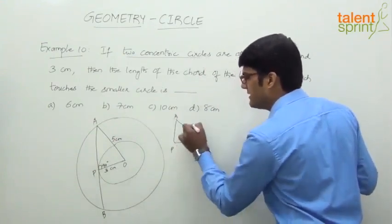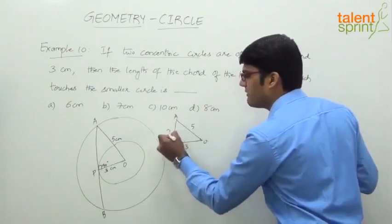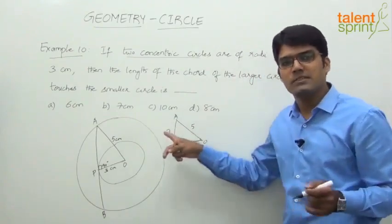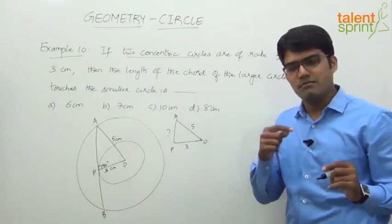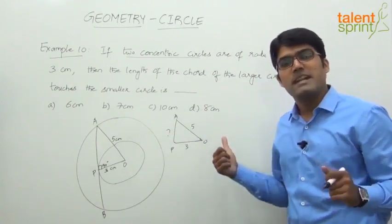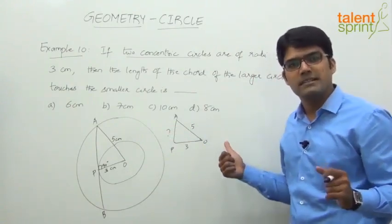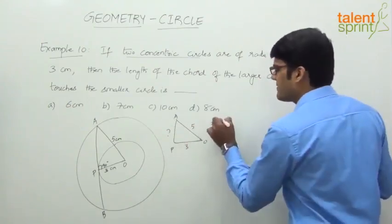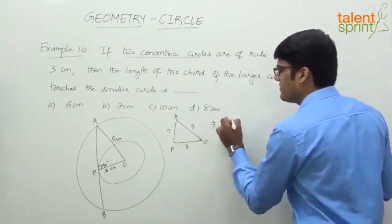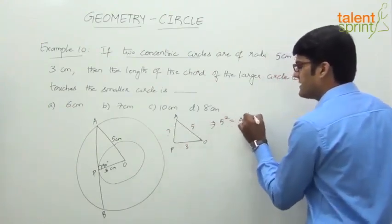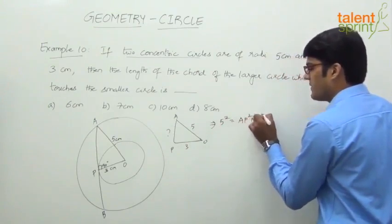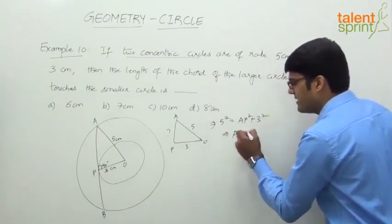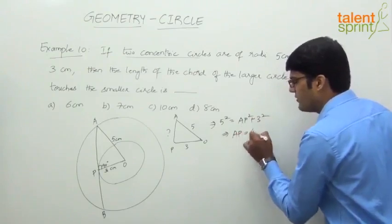In triangle APO, OP is 3 and OA is 5. Find out AP — without even applying Pythagoras theorem, you can say it is 4, because the smallest Pythagorean triplet is 3, 4, 5. Otherwise: 5 squared equals AP squared plus 3 squared, so AP squared equals 25 minus 9 equals 16, therefore AP equals 4 centimeters.